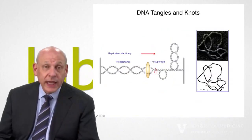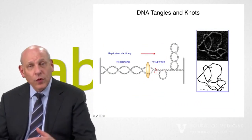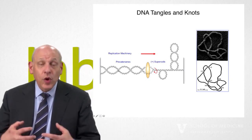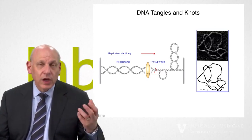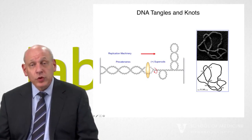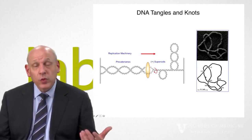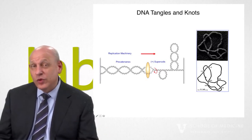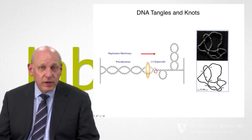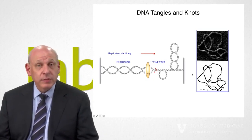Sometimes during replication, some of the energy from overtwisting goes behind the fork and the two daughter chromosomes become interwound. Hence, you get what we call catenanes — basically interlocked circles. During normal cellular processes, you also get knots and tangles in your DNA. Think of it as having a really long rope in a very small space — ultimately you're going to get knots, and the cell has to be able to deal with this.